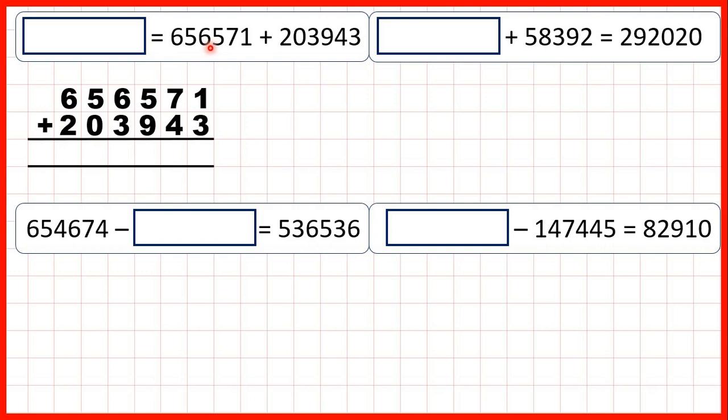We just need to add 656,571 and 203,947. 1 plus 3 is 4, 7 plus 4 is 11, so 1, 1.